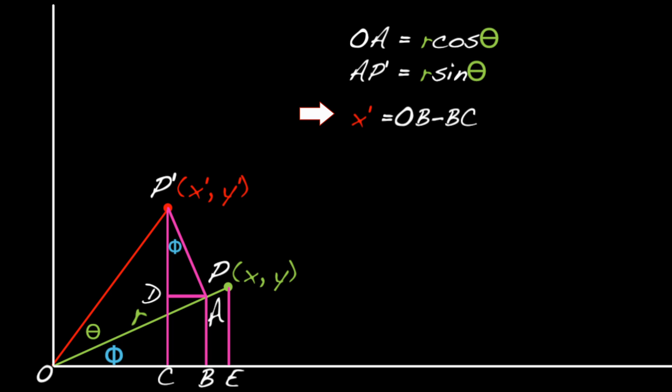So, X prime equals OB minus BC. And since BC equals AD, we can write X prime equals OB minus AD.